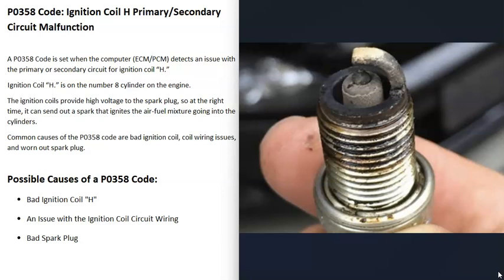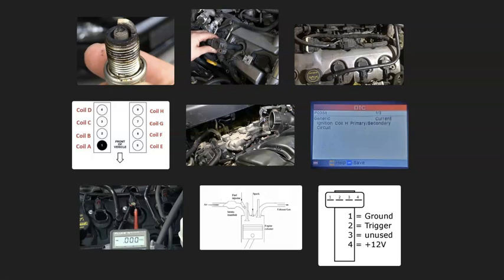The last thing I list is going to be a bad spark plug. This isn't going to be too common—usually if you get a P0358 code, it's going to be a bad coil or some kind of issue going on inside the wiring. But that ignition coil does work with that spark plug to send out the spark at the right time, so it is possible there's some kind of issue going on with that spark plug. If you check everything else out and you just can't seem to find any issues, it's a good idea to take that spark plug out and look at it.